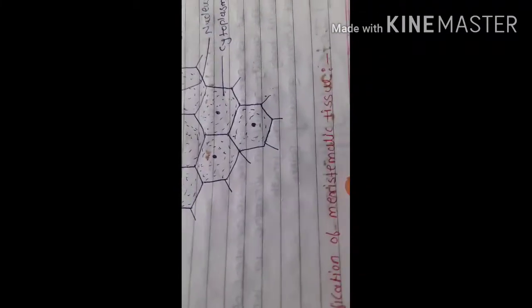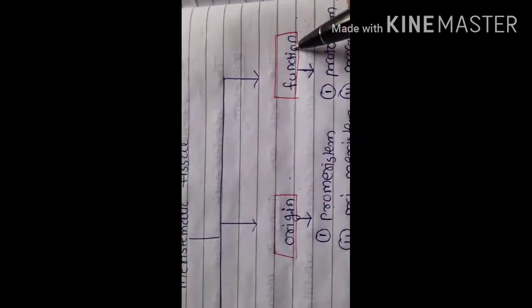The classification of meristematic tissue is based on three main criteria: position, origin, and function. The meristematic tissue is mainly classified into three categories on the basis of each of these criteria.